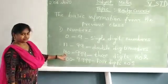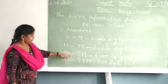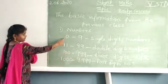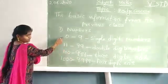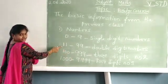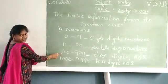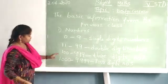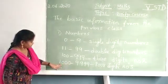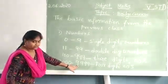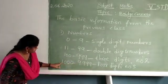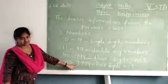So here you can see the numbers from 100 to 999. You can see the difference across the categories: the first is the single digit number, the second is the 2-digit numbers, the third is 3-digit numbers, and the final one is 4-digit numbers — from 1000 to 9999.